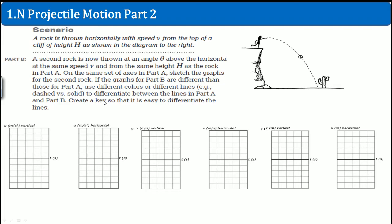Now, a second rock is thrown but with angle theta above the horizontal. Before, the object just went horizontally and dropped. This time, it goes upward at angle theta, then comes back down. Assuming theta is between 0 and 90 degrees, let's consider what happens.